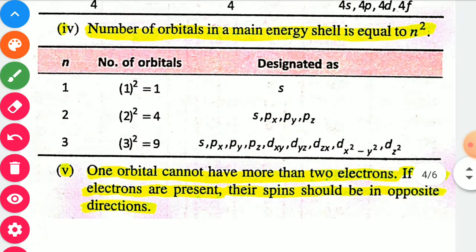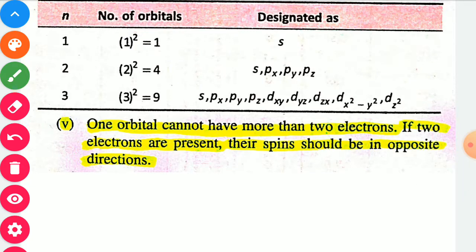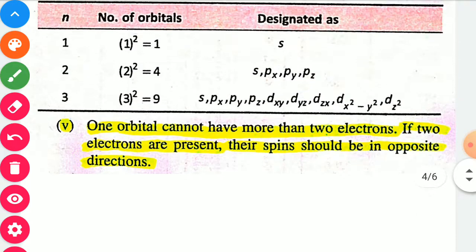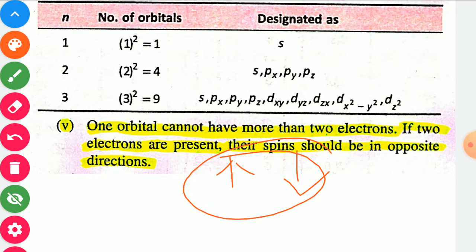The fifth conclusion: one orbital cannot have more than 2 electrons. In a particular orbital, 2 electrons can be accommodated with opposite spin. Maximum number of electrons in a particular orbital is 2; minimum may be 0 or 1. If 2 electrons are present, their spins should be opposite — one upward and one downward, i.e., paired electrons with opposite spin.